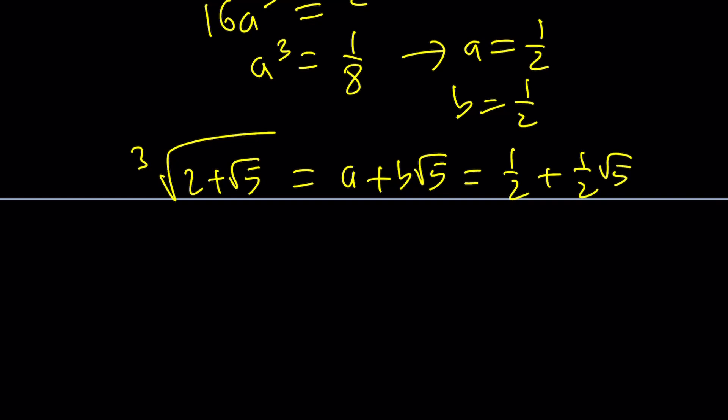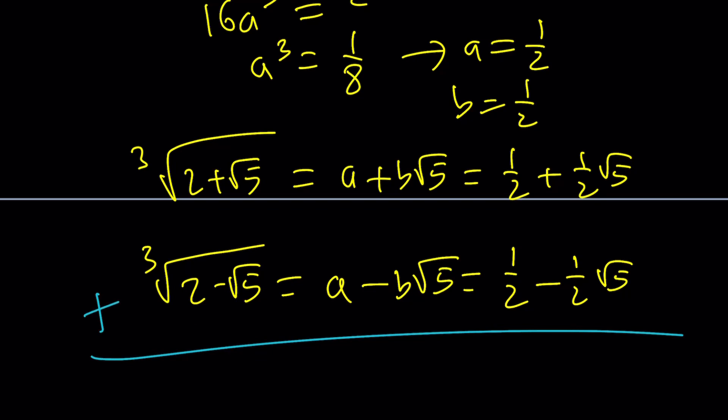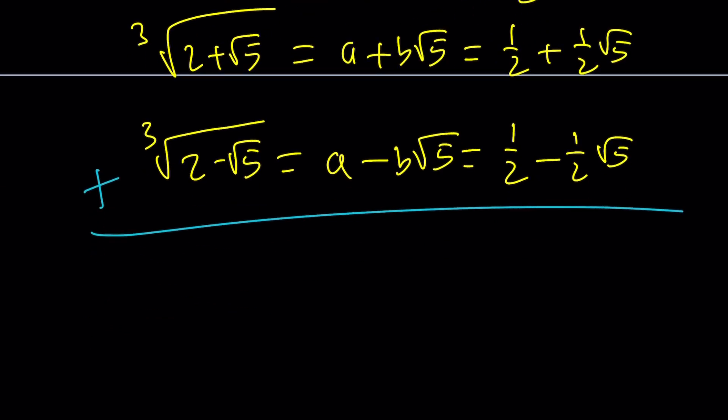And of course the cube root of 2 minus root 5 is going to be a minus b root 5. If you don't believe that cube both sides you'll see by the binomial theorem they're supposed to be that way. 1/2 minus 1/2 root 5. Add these up and voila you'll get the answer. And the answer is going to be 1 as before. Make sense?